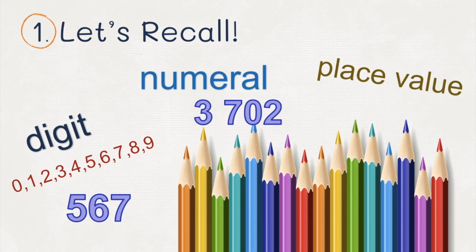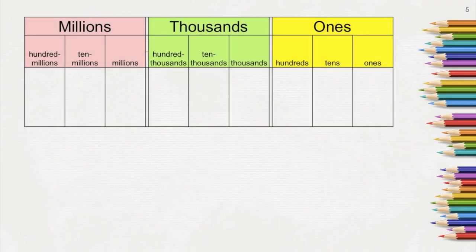Place value. This term can be defined as the value represented by a digit in a number on the basis of its position in the number. It can be best understood by looking at this place value chart. Notice that our place value chart is divided into three periods.